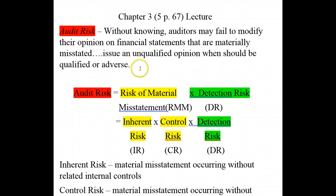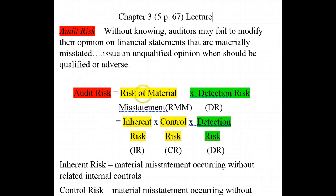Audit risk is the risk that we may not modify an unqualified opinion when there are significant material misstatements in the financial statements. Audit risk equals the risk of material misstatement times the detection risk. The risk of material misstatement is actually composed of two things: inherent risk and control risk.